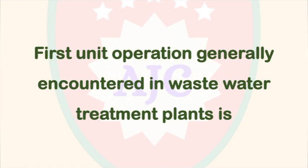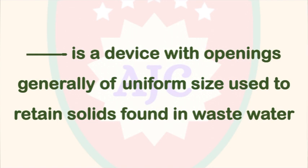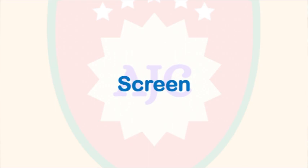The first unit operation generally encountered in a wastewater treatment plant is screening. A screen is a device with openings of generally uniform size used to retain solids found in wastewater. Solid particles are retained and removed from the sewage water in a process called screening.